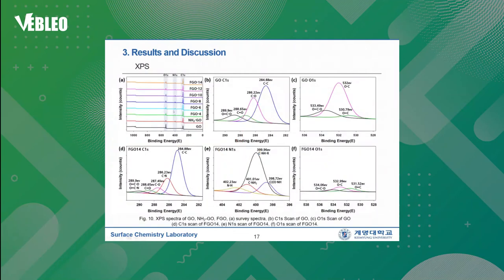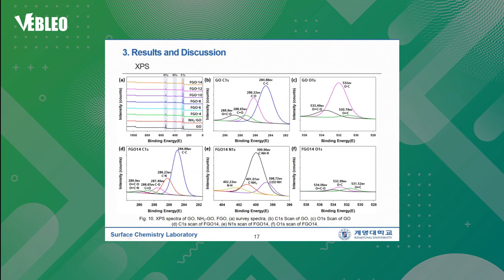This is a series of XPS spectra taken for GO and FCO samples. In this survey spectra for 8 samples, the oxygen 1s peak appears at 532 electron volts and the carbon 1s peak appears at 287 electron volts in GO. But the intensities of these peaks are much decreased in FCO samples. Also, the N1s peak — which did not appear in GO — appears at 399 electron volts in FCOs. Therefore, we can confirm that amine groups are successfully attached to GO sheets. These results are also confirmed in the hyperfine spectra B, C, D, E, and F.